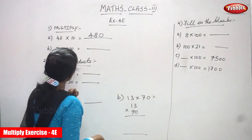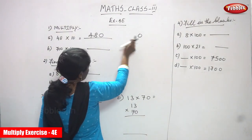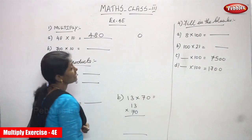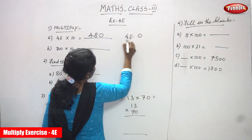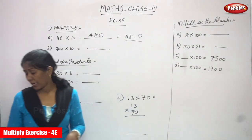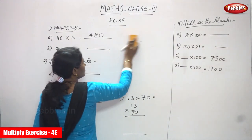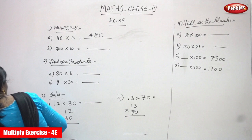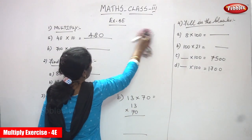Otherwise you can do it another way: first write the zero at the end, then multiply the remaining numbers — 48 into 1 — to get 480. Whatever method you use, you get the same answer. I'm choosing the second method because it is more convenient for me. If you are comfortable with the first rule, you can use that — it is not an issue.